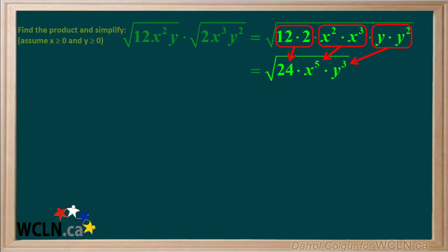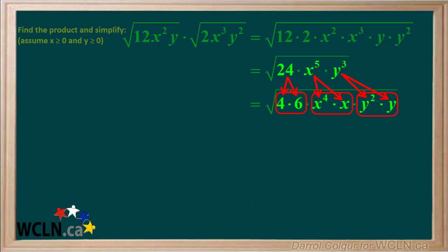12 times 2 is 24. x squared times x cubed is x to the 5th, and y times y squared is y cubed. So we're left with this. Now we factor 24 into 4 times 6, x to the 5th into x to the 4th times x, and y to the 3rd into y squared times y.